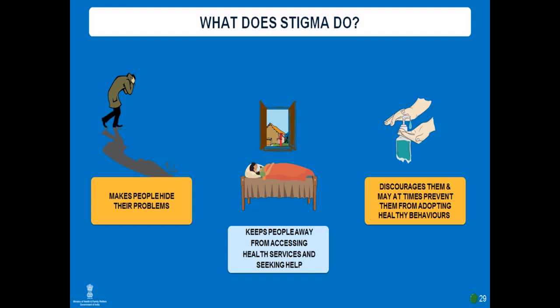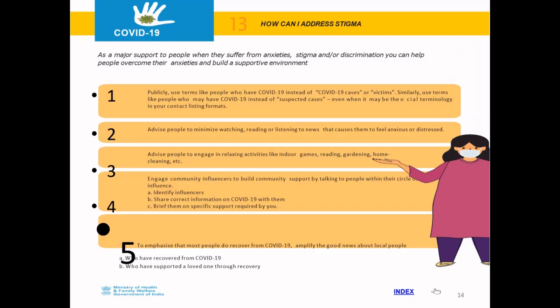What does stigma do? It makes people hide their problems, keeps people away from accessing health services and seeking help, and may prevent them from adopting healthy behaviours. As a COVID Warrior, address stigma by publicly using terms like 'people who have COVID-19' instead of 'COVID-19 cases or victims,' and 'people who may have COVID-19' instead of 'suspected cases.' Advise people to minimize watching news that causes anxiety. Encourage relaxing activities like indoor games, reading, and gardening. Engage community influencers to build support. Emphasize that most people do recover from COVID-19, and amplify good news about local people who have recovered.